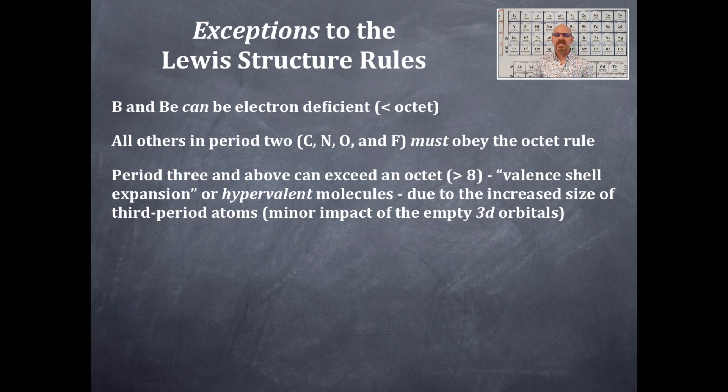Period three and above can exceed the octet rule, that is greater than an octet. That's called a valence shell expansion or they are called hypervalent molecules.